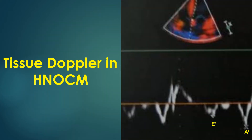Tissue Doppler imaging in hypertrophic non-obstructive cardiomyopathy shows a pattern suggestive of left ventricular diastolic dysfunction. A' during atrial systole is of higher amplitude than E' during early diastole. Normally, E' is of higher amplitude than A'. The upper panel shows the color 2D image from the apical 4-chamber view, confirming that TDI sampling is from the medial or septal mitral annulus.